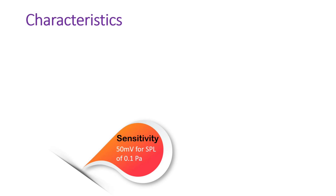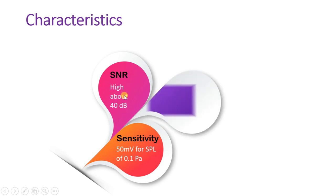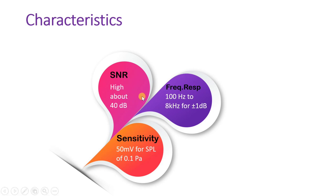Now, characteristics of crystal microphone: sensitivity is 50 millivolt SPL for 0.1 Pascal. To increase this sensitivity, one can use multiple crystal slices in the microphone. The SNR is high at about 40 dB, giving a very good signal-to-noise ratio. If we look at frequency response, it ranges from 100 Hz to 8 kHz.